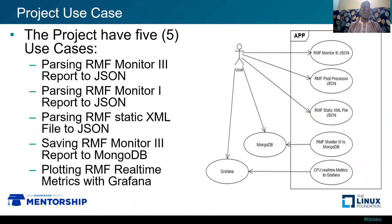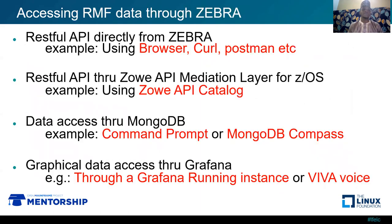The project has five use cases. The first is parsing RMF Monitor 3 report to JSON. The second is parsing RMF Monitor 1 report to JSON. The third is parsing RMF static XML file to JSON. The fourth is saving RMF Monitor 3 report to MongoDB. The fifth is plotting RMF real-time metrics to Grafana.